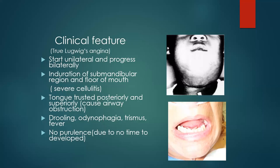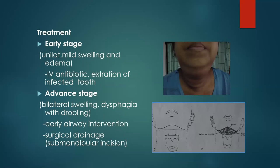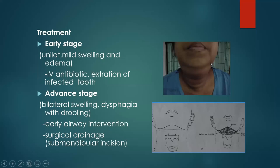In the early stage of submandibular cellulitis, we have unilateral mild swelling and oedema — we give IV antibiotics and extract the infected tooth. In the advanced stage, we need to do surgical drainage and early airway management by tracheostomy. If this patient presents to a hospital, we put a tracheostomy because as you can see, the infection starts unilateral, then rapidly progresses to the other side and extends to the neck. You need to protect the airway before you get laryngeal oedema.